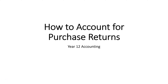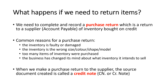This video is going to show you the process of how to account for or record purchase returns. This relates to chapter 5 of our Year 12 accounting text. A purchase return is where we return an inventory item to our supplier. Our suppliers are going to be our accounts payable, and we only do this for items that were bought on credit for the purpose of Year 12 accounting.